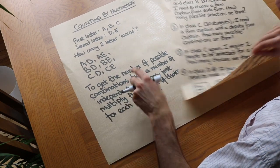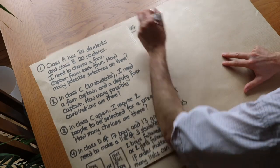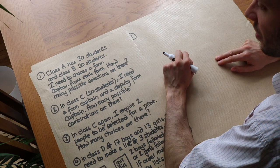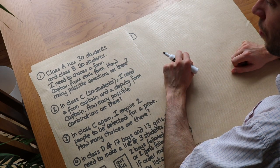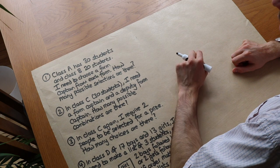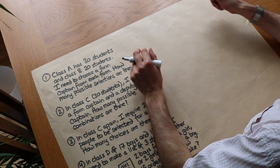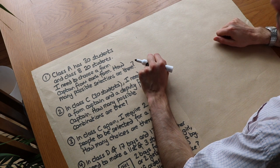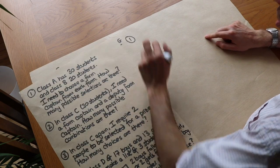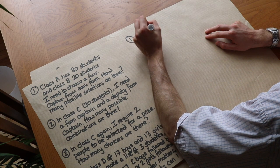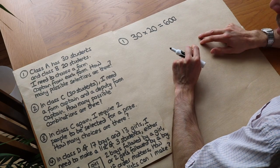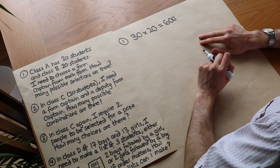Now let's do some examples. Question one: Class A has 30 students and class B has 20 students. I need to choose a form captain from each class. How many possible selections are there? We have 30 choices from class A, and then independently we can choose someone from class B, so we have 20 choices there. The total number of combinations is 30 times 20, which equals 600.